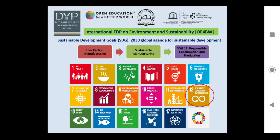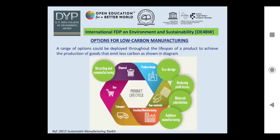SDG 12 is achieved through low carbon manufacturing, which has a positive impact in terms of sustainable manufacturing and is helpful for achieving SDG Goal 12 — responsible consumption and production. There are several options for low carbon manufacturing across the entire lifespan of a product; at various stages of the product life cycle we can implement different options to convert conventional processes into low carbon manufacturing.